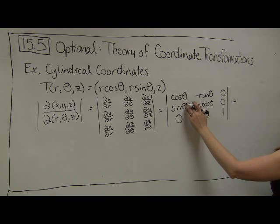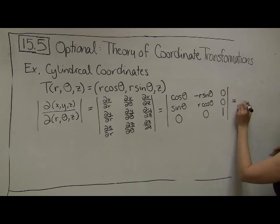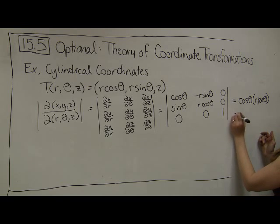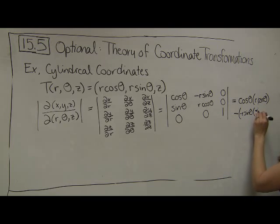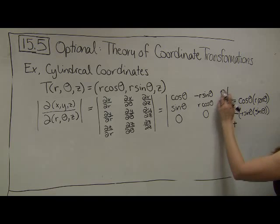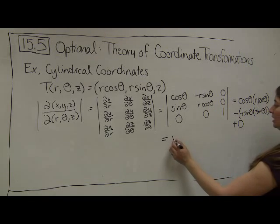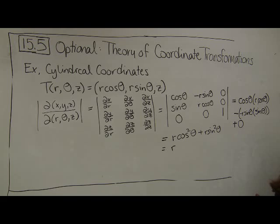Looking at the determinant of this matrix: it's going to be cosine theta times (r cosine theta times 1 minus 0), minus (negative r sine theta) times (sine theta times 1 minus 0), plus zero. In conclusion, the determinant is r cosine² theta minus (negative r sine² theta). Factoring out the r, I get r times (cosine² theta + sine² theta), which equals r times 1, giving just r.